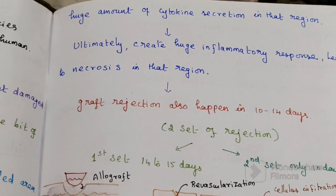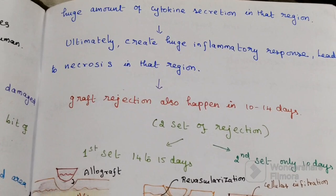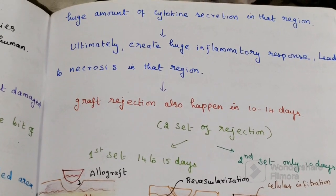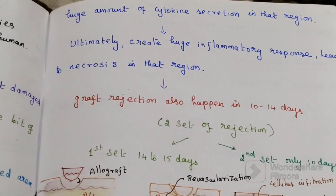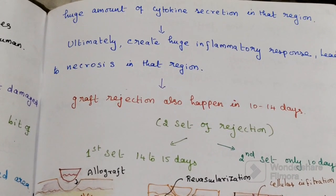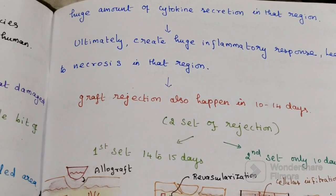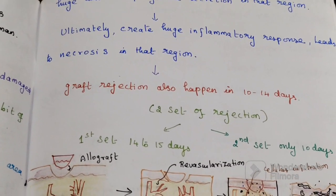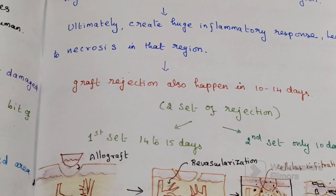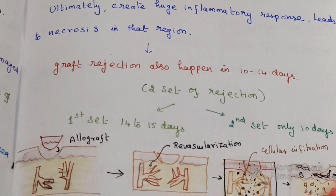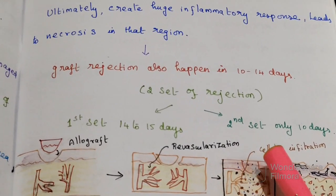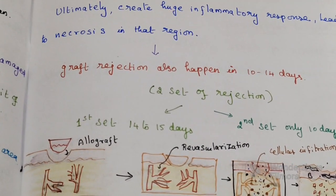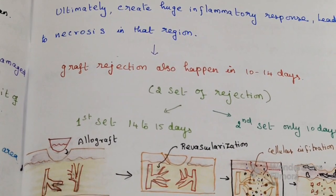There would be two types of graft rejection. The first set of graft rejection takes place in about 14 to 15 days. The second set of rejection takes place within 10 days.